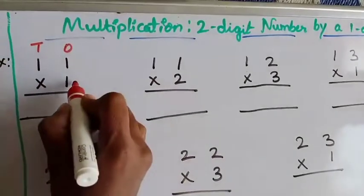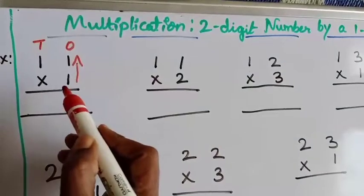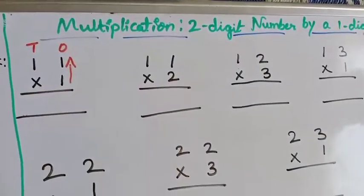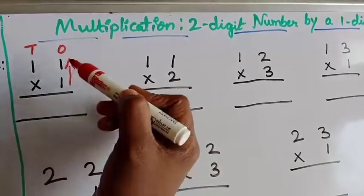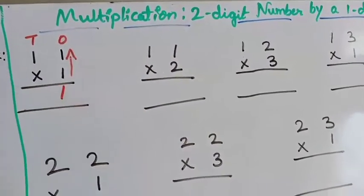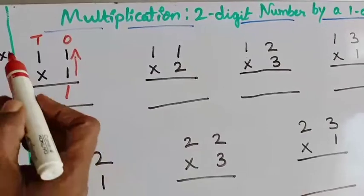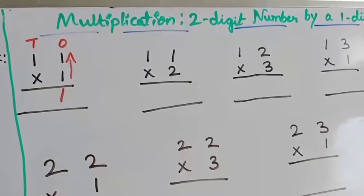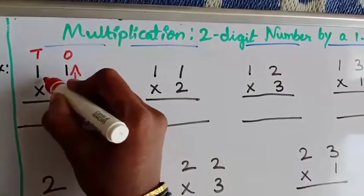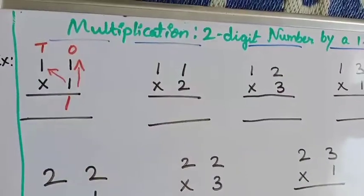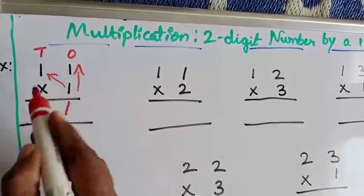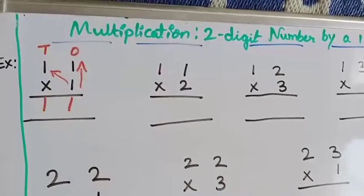The next step is to put the arrow mark. This arrow mark shows we have to go down to up. So, 1 one's up is 1. Then, since we have one more number in the 10's place, we have to go cross like this. So again, 1 one's up is 1. That answer we have to write here.